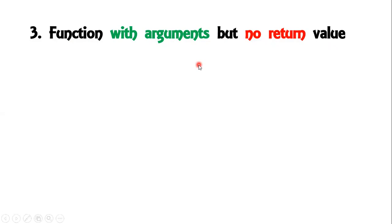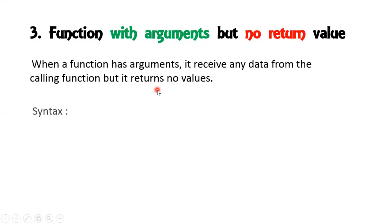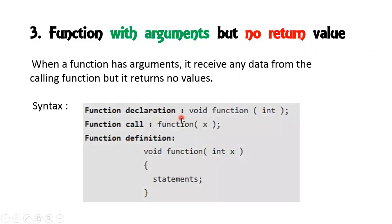When a function has arguments, it receives any data from the calling function — it may be a character, an array, or anything. It will receive data from the calling function, but it returns no values because it will execute in the user-defined function only. That is the reason why it will not return any values. The syntax is very simple.